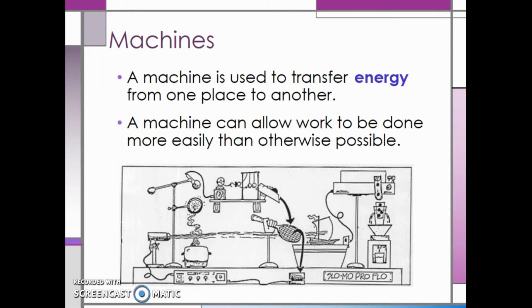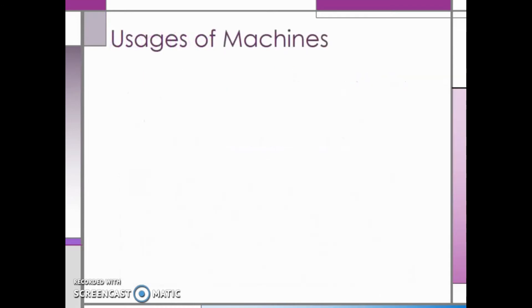Rube Goldberg machines are purposely over-engineered to perform simple tasks. Specifically, this Rube Goldberg machine needs over eight steps just to pour a glass of water at the end. Machines have some very specific uses.